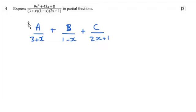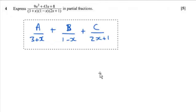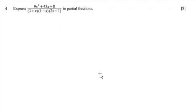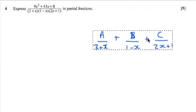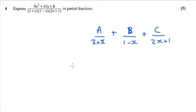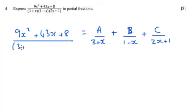I'm just going to move that over a little bit. We want that to equal our original question, 9x² + 43x + 8 over those 3 brackets: 3 + x, 1 - x, and 2x + 1.